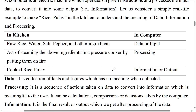If you want to make rice pulao in the kitchen, what process will you follow? In the kitchen you need raw rice, water, salt, pepper, and other ingredients. Similarly, in a computer you need data or input to process information. So we are comparing two things: the kitchen and the computer.